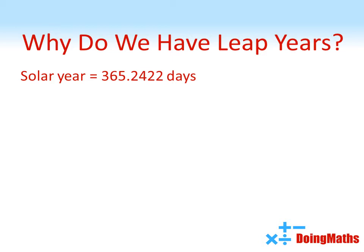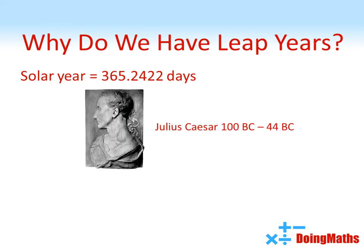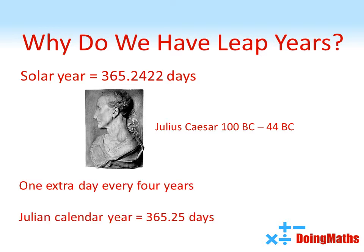This extra 0.2422 days a year means a 365-day calendar quickly falls out of sync with the actual seasons. So, in the year 45 BC, Julius Caesar decreed that the calendar should be reset and a leap day added every four years, effectively creating a calendar year of 365.25 days — a system which we call the Julian calendar.